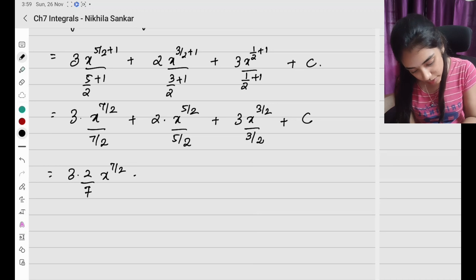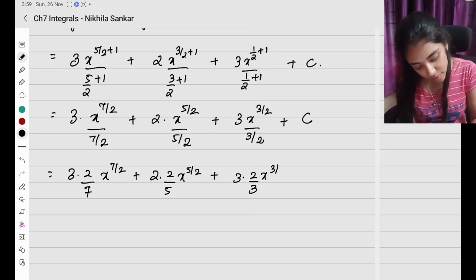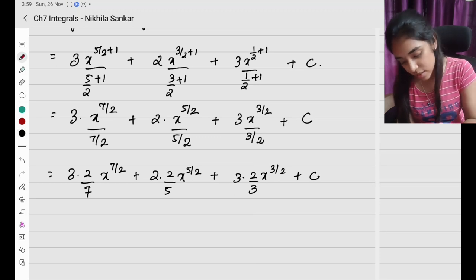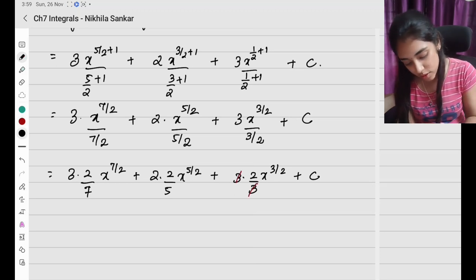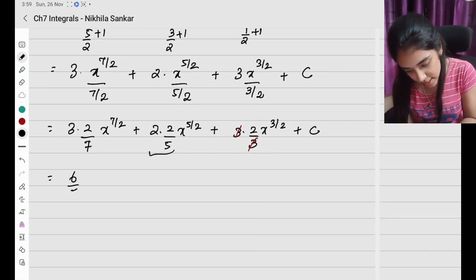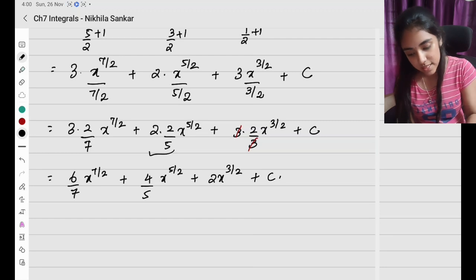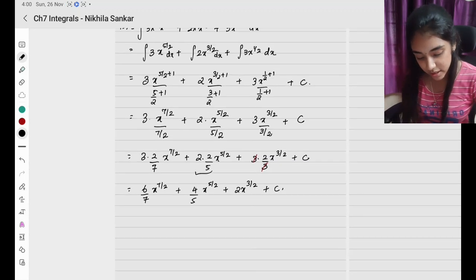So this becomes: 3 times 2 by 7 times x to the power 7 by 2, plus 2 times 2 by 5 x to the power 5 by 2, plus 3 times 2 by 3 times x to the power 3 by 2. The 3's cancel, giving 6 by 7 x to the 7 by 2, plus 4 by 5 x to the power 5 by 2, plus 2 x to the power 3 by 2, plus c. That is the final answer — please copy.